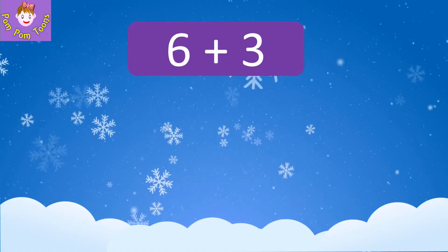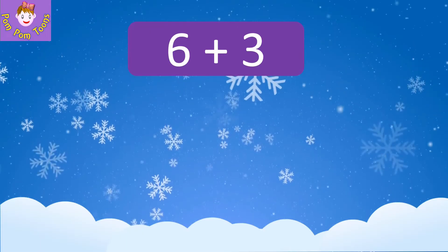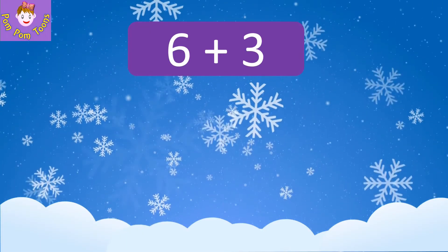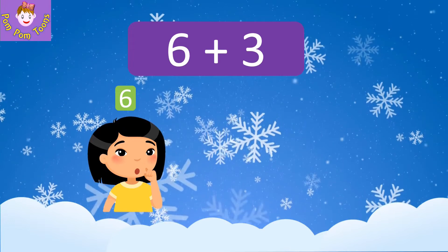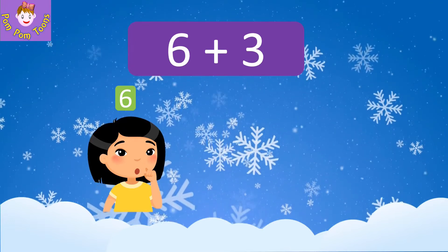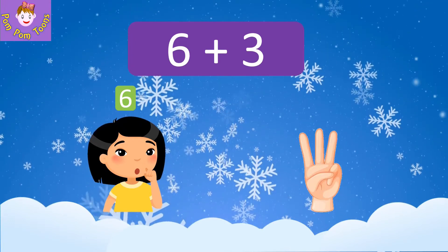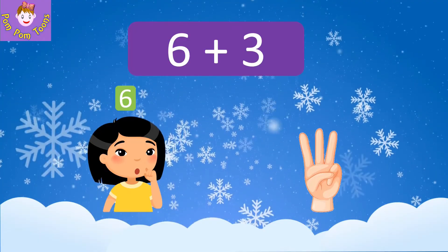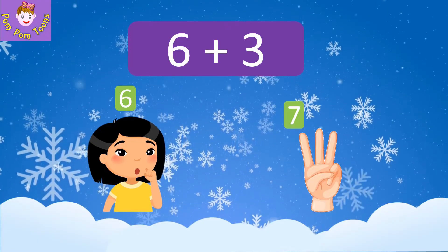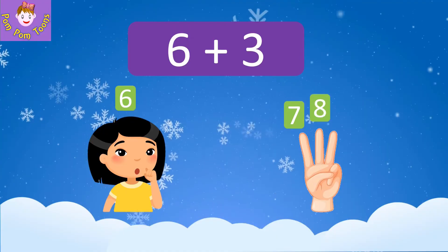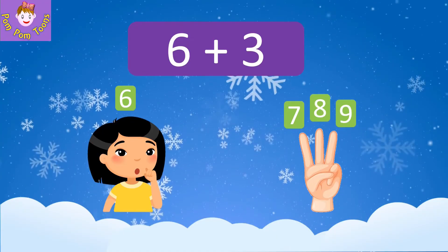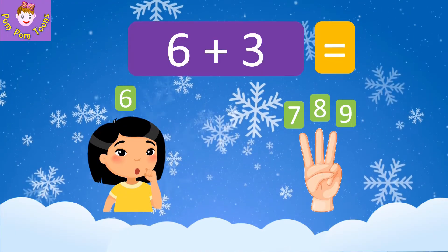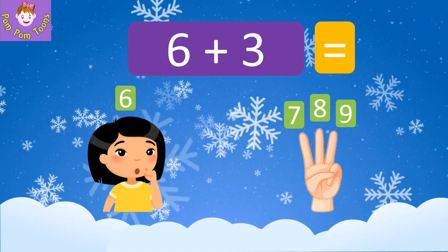Add six and three. Keep six in your mind and open three fingers. Count after six: seven, eight, nine. Six plus three is equal to nine.